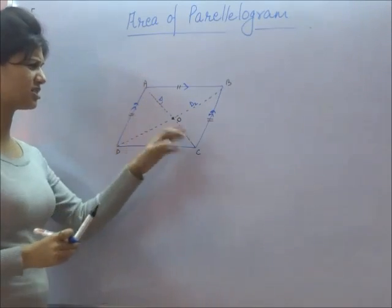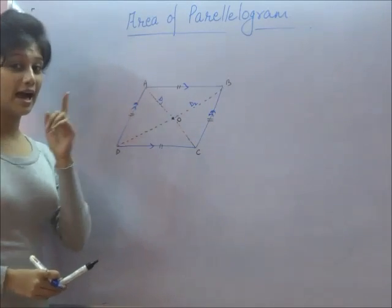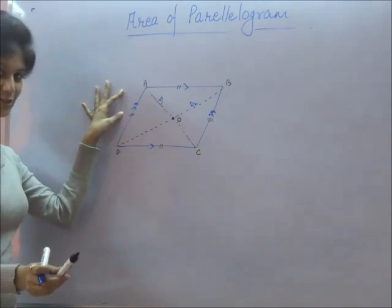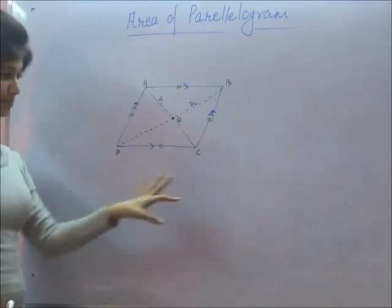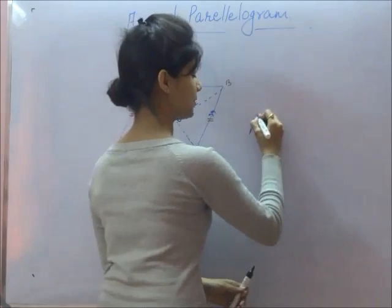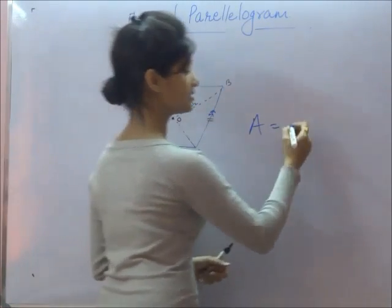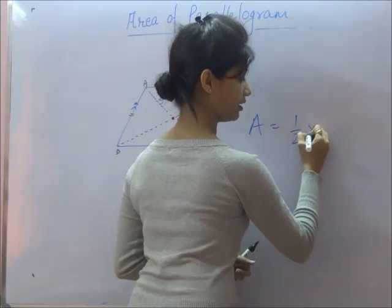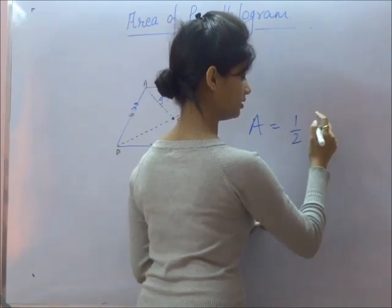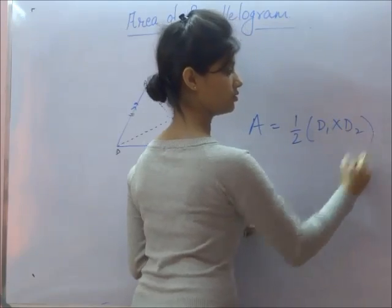Now, why are we considering diagonals in the calculation of this area? As we have seen, rhombus is a special case of parallelogram, so it would have a special area formula also. We calculate it as half into D1 multiplied by D2.